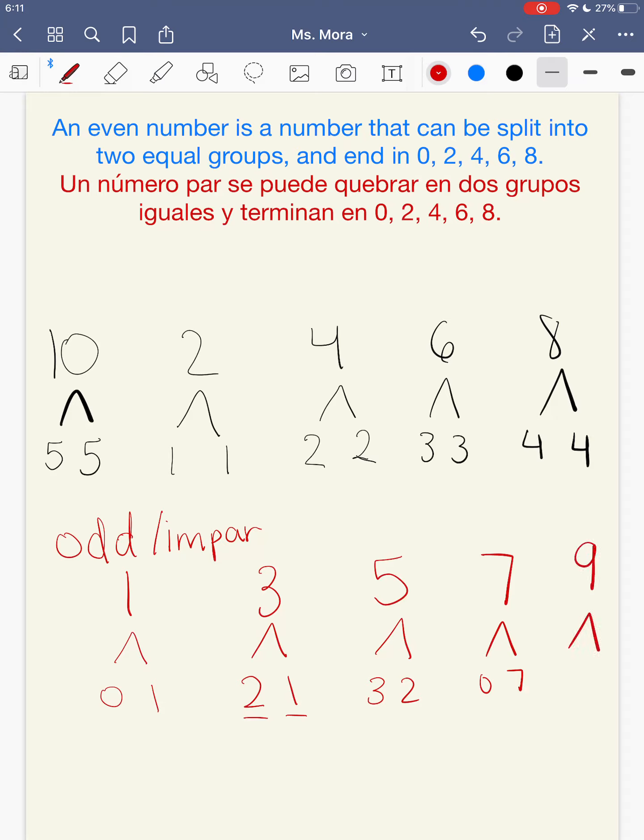And 9. 9, you could add 8 and 1. Those are not equal groups. 7 and 2, those are not equal groups. 6 and 3, those are not equal groups. 5 and 4, those are not equal groups. And 0 and 9, those are not equal groups. So 9 is also odd. It's an odd number. 9 también es impar, porque cuando vas a sumar dos números, nunca vas a sumar números iguales.